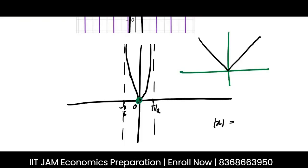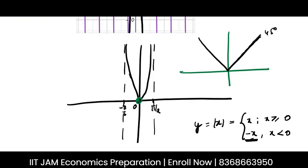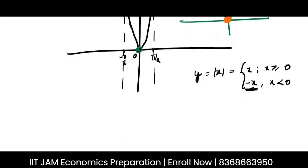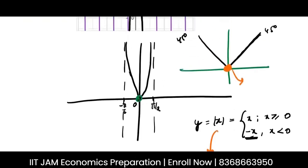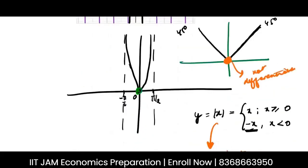The mod function is x for x ≥ 0 and −x for x < 0, giving a 45-degree line on each side. Any mod-type function is continuous throughout, but at x = 0 it is not differentiable. Any function which has this kinkiness is not differentiable. So this function too, which joins the two pieces at x = 0, is non-differentiable there, though it is obviously continuous.